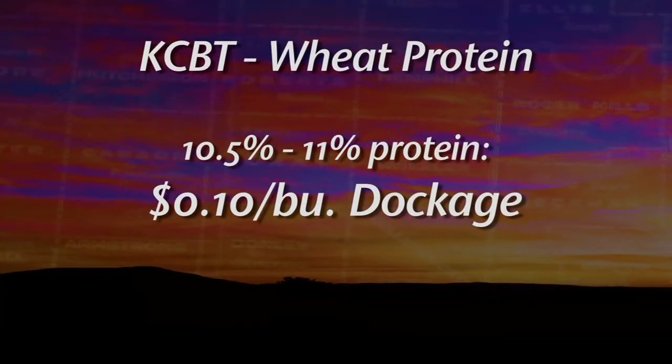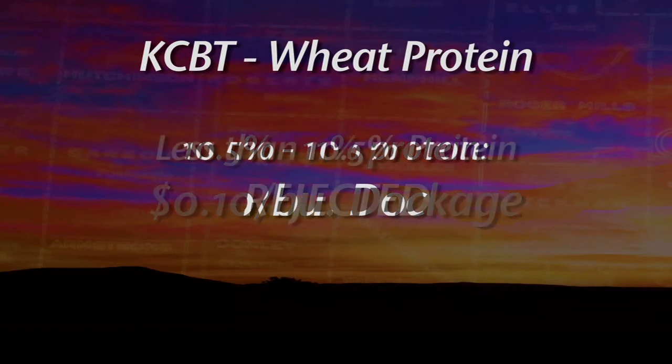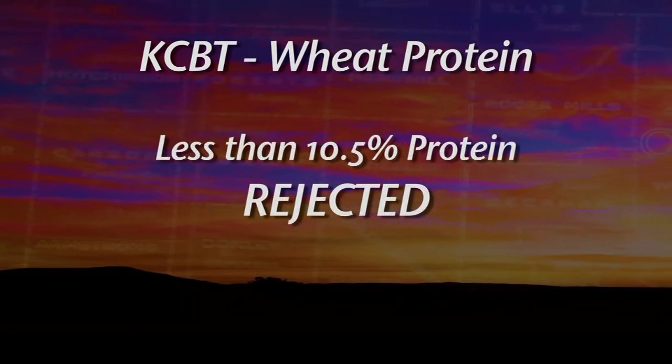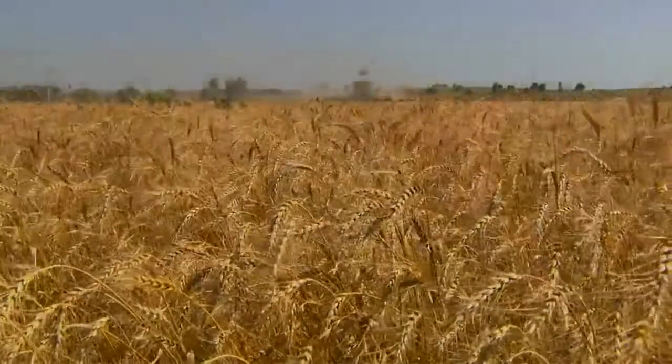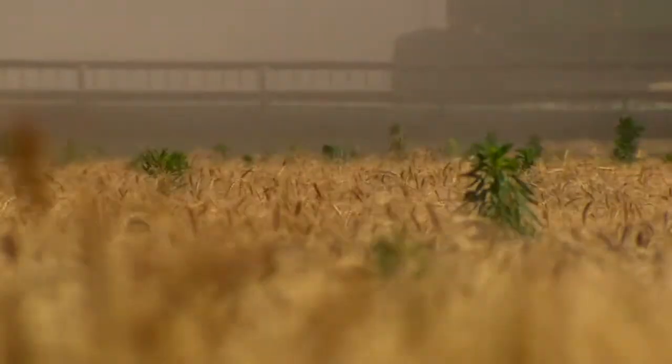There's a lot of talk this year about protein, a lot more than we normally hear on the subject. Why is the real focus this year that way? The protein issue is coming up with the Kansas City Board of Trade values. Anything between eleven percent and ten point five percent is going to get a ten cent per bushel dockage. Anything below ten point five is to be rejected. There's a lot of concern, especially after last year's crop in areas such as southwest Oklahoma, where we had really high yields — unaccustomary high yields — and low protein issues, seeing nine percent protein.